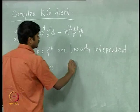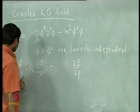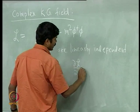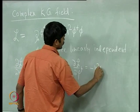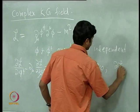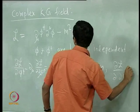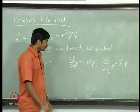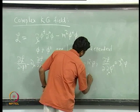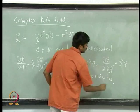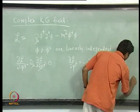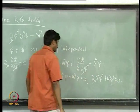This gives a similar equation for φ†. Considering the φ† equation: ∂L/∂φ† = -m² φ, and ∂L/∂(∂_μ φ†) = ∂^μ φ. Substituting these into the equation of motion gives ∂_μ ∂^μ φ + m² φ = 0. Similarly, the Hermitian conjugate gives ∂_μ ∂^μ φ† + m² φ† = 0. These are the equations of motion for the complex Klein-Gordon field.